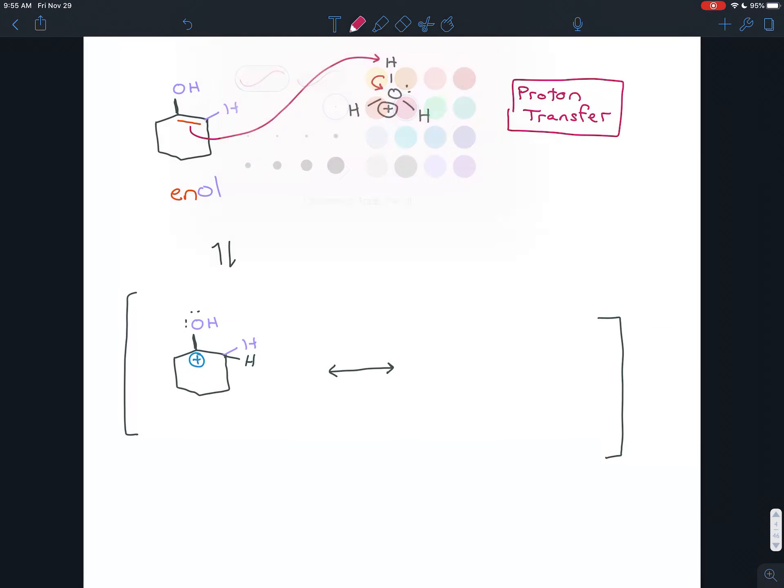So when you have lone pairs next to a positive charge, the curved arrow pattern is that the lone pairs get sucked toward the positive charge, and so they form a sort of pi bond there.